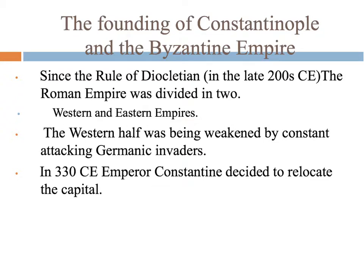Since we haven't talked about Europe in a while, we're going to go back and just review a little bit to see how this connects to what we've already learned. Remember way back in the Roman Empire, the empire was divided into two. Why did they divide it into two? It became so big that it was hard to control, and so Diocletian divided it in two to try to make it easier to control. Which half fell? The western half was much weaker economically, had a lot more invasions. Constantinople, which became the capital of the Byzantine Empire, was established as the capital of the Eastern Roman Empire by Emperor Constantine back in 330 CE.